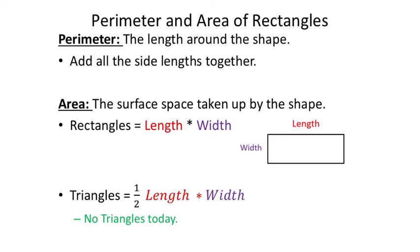Perimeter is just the length around the shape. If we see a rectangle, it's how far it is to go all the way around, which means we just add the four side lengths together — the width, length, width, and length. There are formulas to do this, but as long as you understand it's the total length around the outside of the shape, you're good. For a triangle, you'd be adding three lengths together.